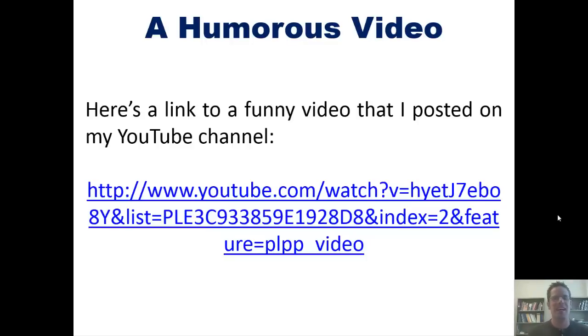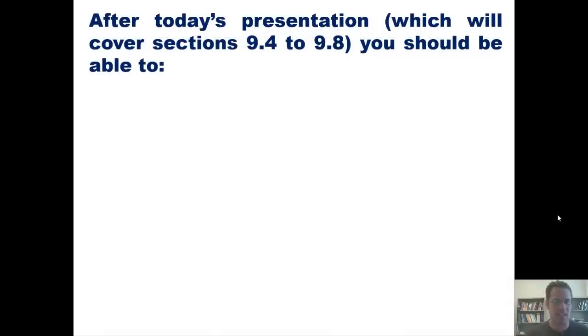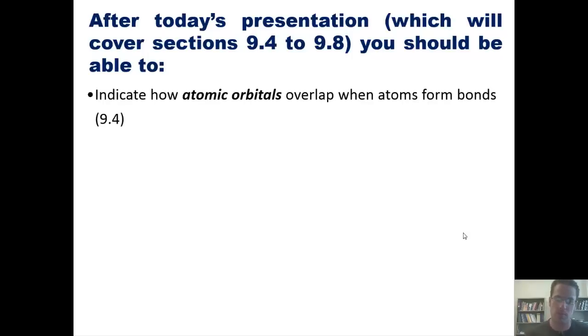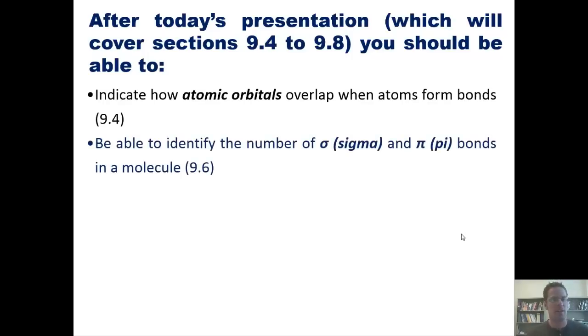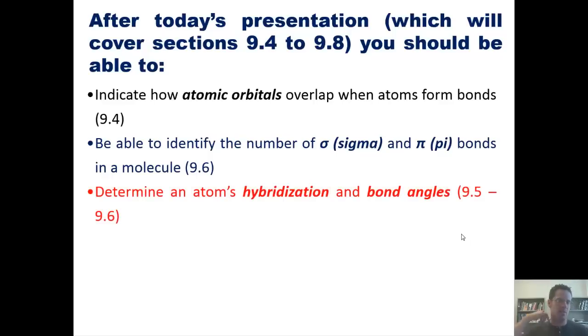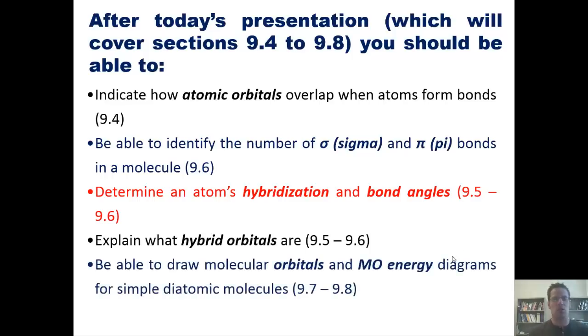With that said, let's get back to business. After this lecture or series of presentations, you should be able to do the following: indicate how atomic orbitals overlap when atoms form bonds, identify the number of sigma and pi bonds in a molecule, determine an atom's hybridization and bond angles, explain what hybrid orbitals are, draw molecular orbitals and molecular orbital energy diagrams for simple diatomic molecules, and calculate bond orders. That's the lineup.